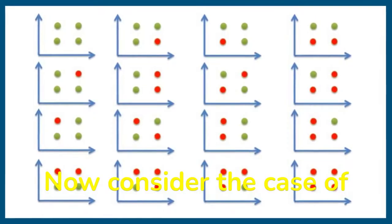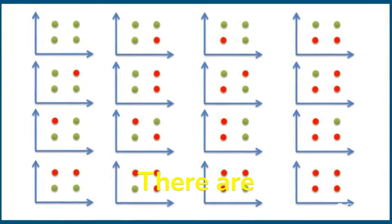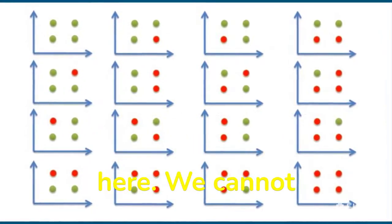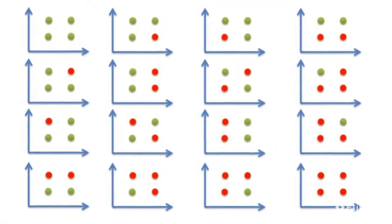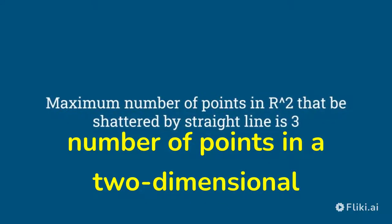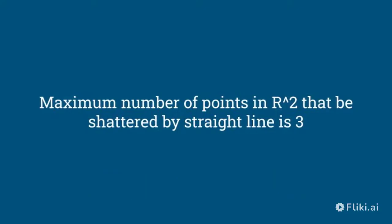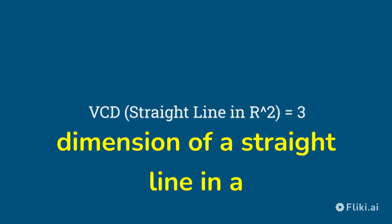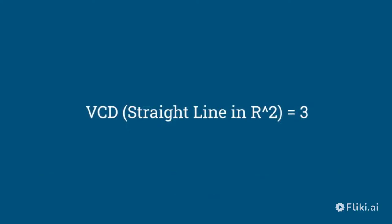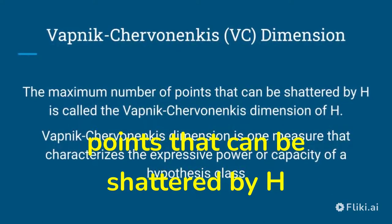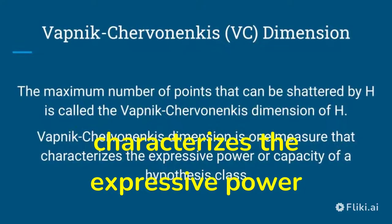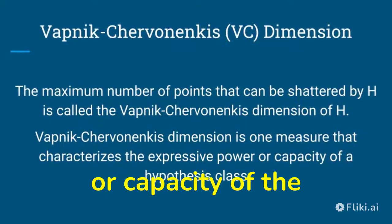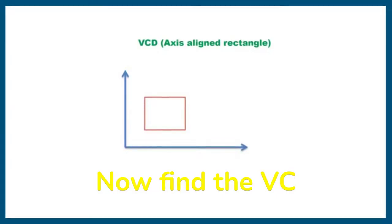Now consider the case of four points. There are 16 different ways of classification. We cannot find a single set of four points that can be shattered by a straight line. That means the maximum number of points in a two-dimensional plane that can be shattered by a straight line is three. We say that the VC dimension of a straight line in a two-dimensional plane is three. The maximum number of points that can be shattered by H is called the VC dimension of H.